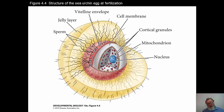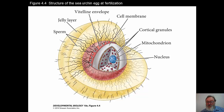Although polyspermy can take place under certain conditions, when it does happen the embryo simply does not usually survive. So if we look at the stages of egg maturation at the time of sperm entry, they are different in different animals.